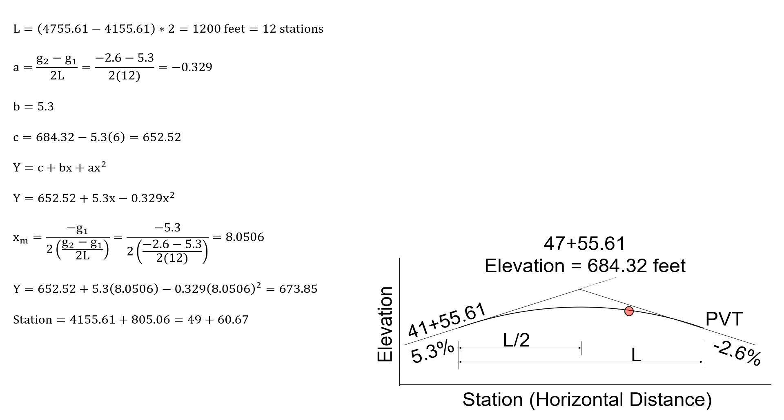And that's approximately the location. The high or low point always happens on the side of the PVI with a flatter grade. So we should expect the station of the high point in this case to be beyond the PVI. So the station should be above station 47 plus 55.61, and it is in this case. So just a quick check that your work is correct.